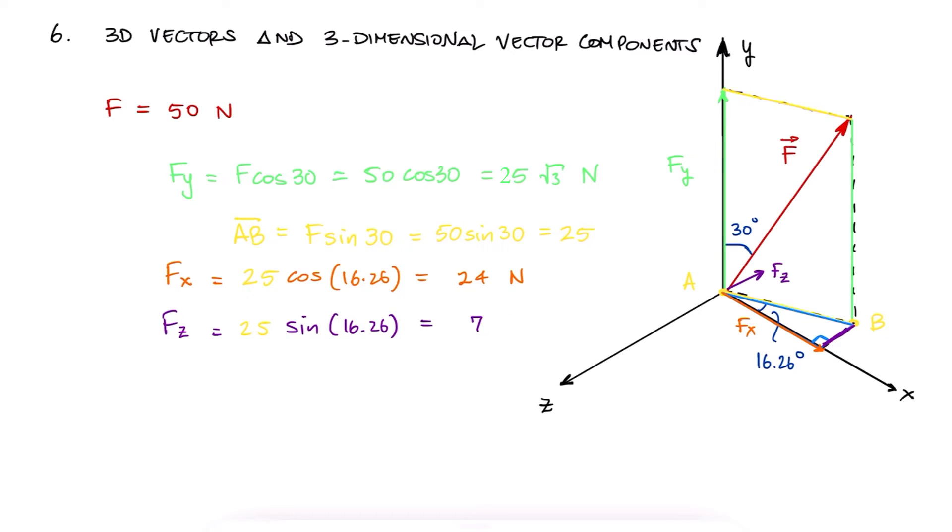When finding these values, you have to remember that the component of z is going in the negative direction of the z axis, so if we're presenting the vector f with the i, j, and k notation, we would write it as 24i plus 25 square root of 3j minus 7k.